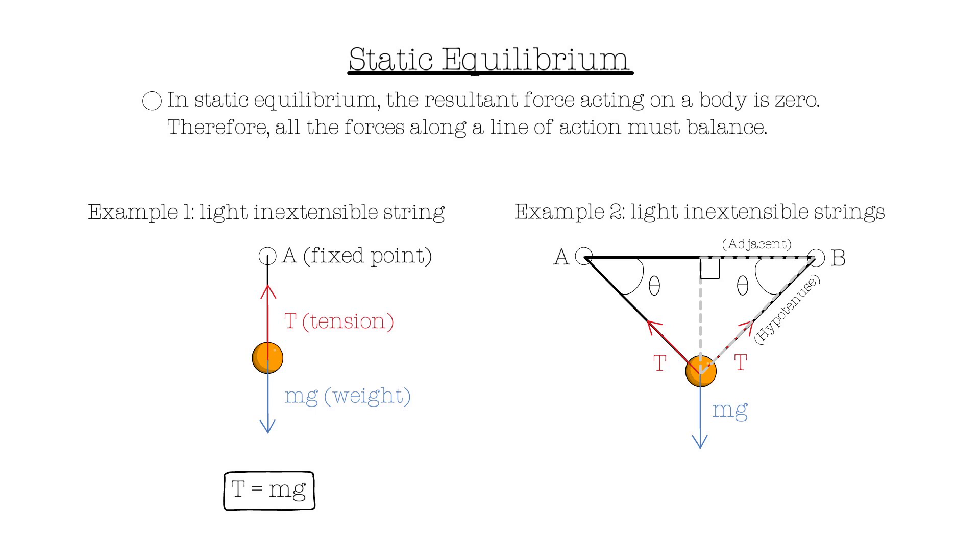In this case, since the tension is distributed along two strings, it must be resolved vertically. Referring back to SOHCAHTOA, we can see that the vertical component can be found using T sine theta. As the tension is distributed along two strings, it is calculated twice. This gives us two T sine theta, giving us the final equation two T sine theta equals mg.